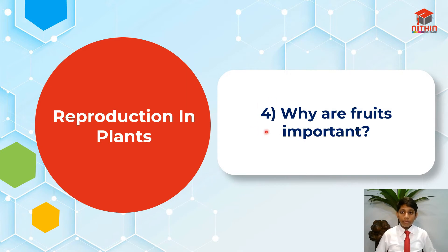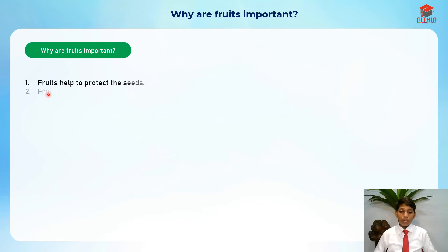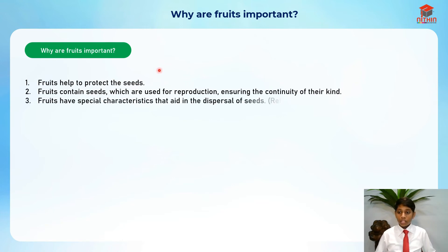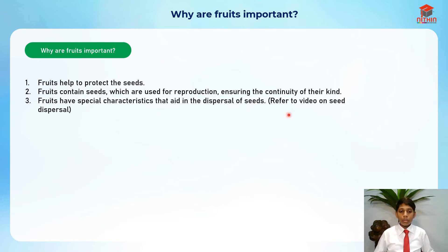For segment four, why are fruits so important? Fruits help to protect the seeds. The fruit contains the seeds, which are useful for reproduction, ensuring the continuity of their kind. Fruits also have special characteristics that aid in dispersal of seeds. You can watch a video on seed dispersal linked in the description box below to understand the special characteristics that help in seed dispersal.